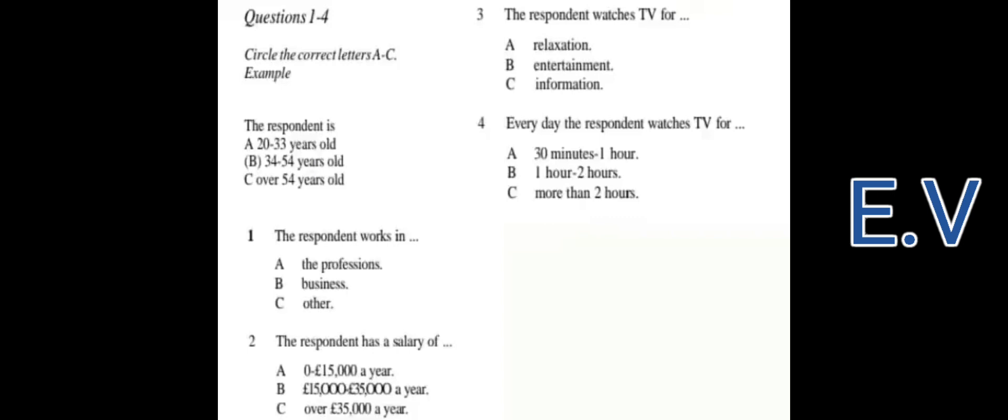The respondent is 35 years old, so B has been circled. Now we shall begin. You should answer the questions as you listen because you will not hear the recording a second time. Listen carefully to the conversation and answer questions 1 to 4.